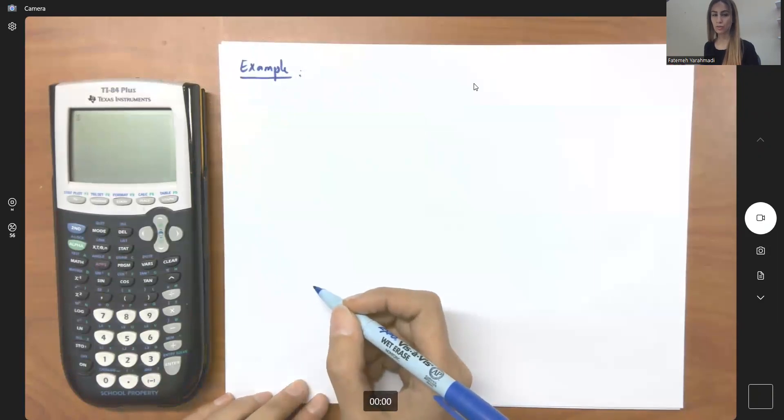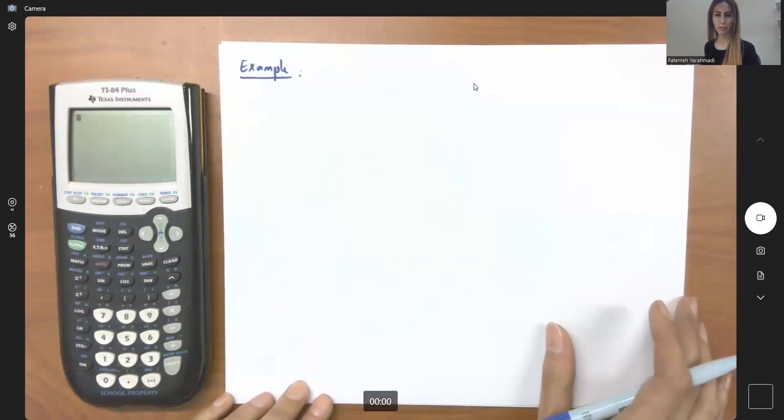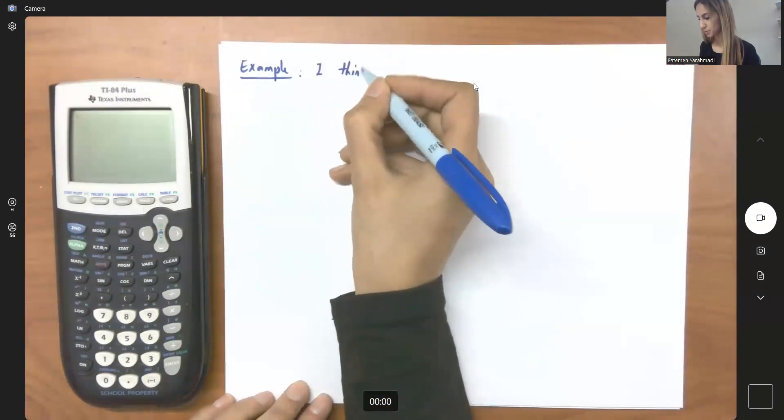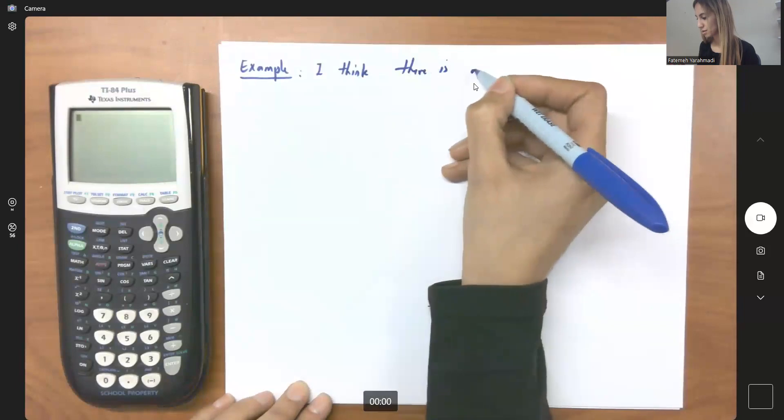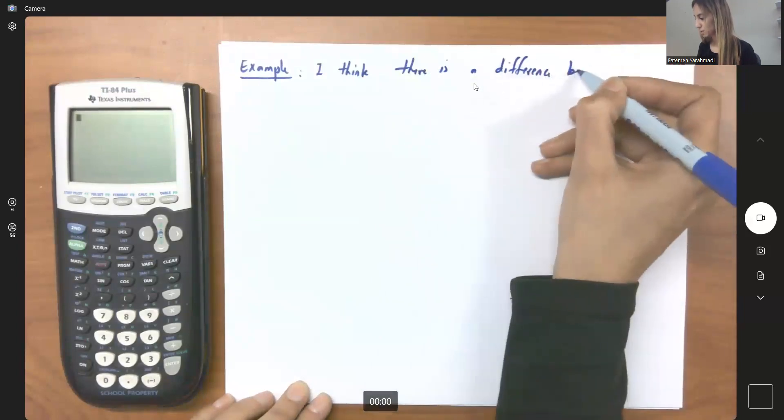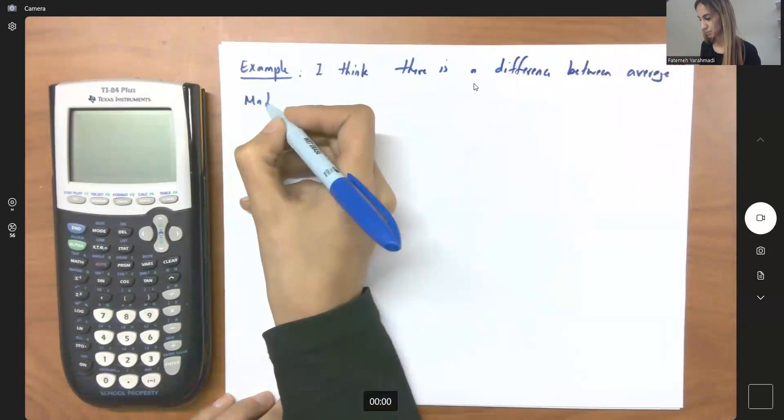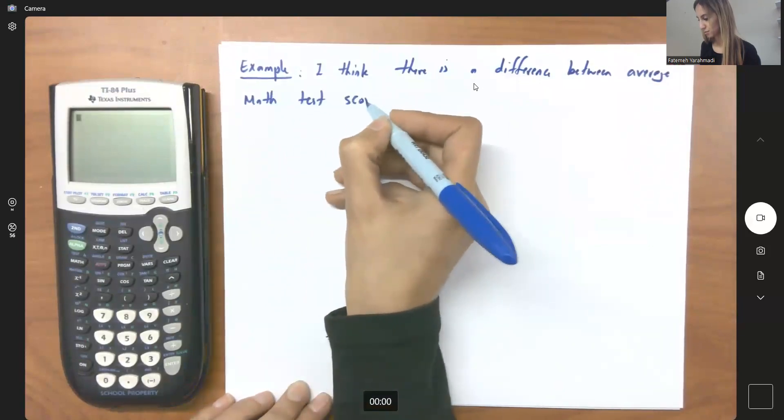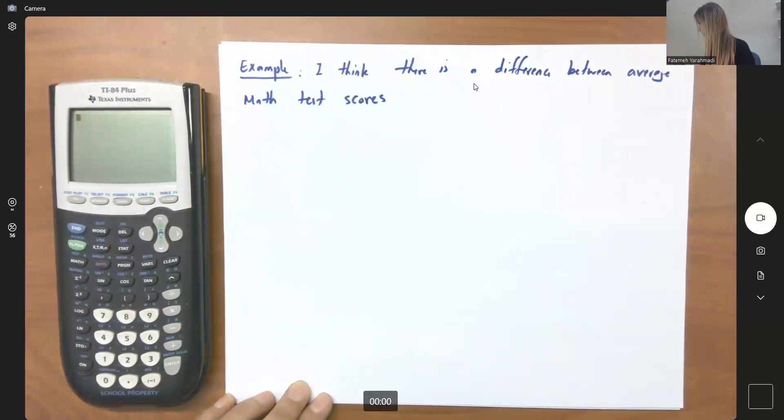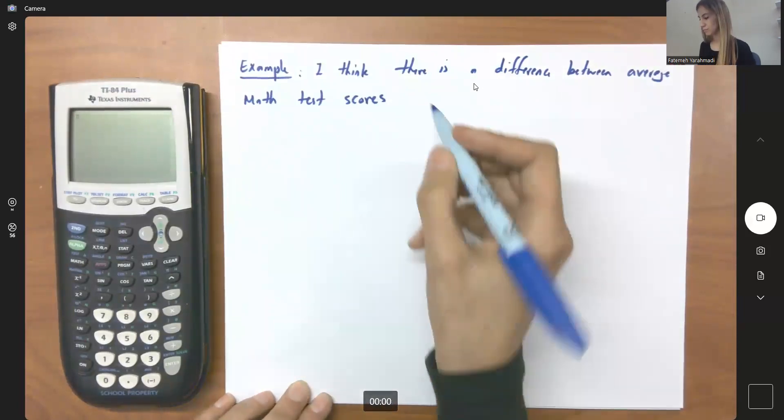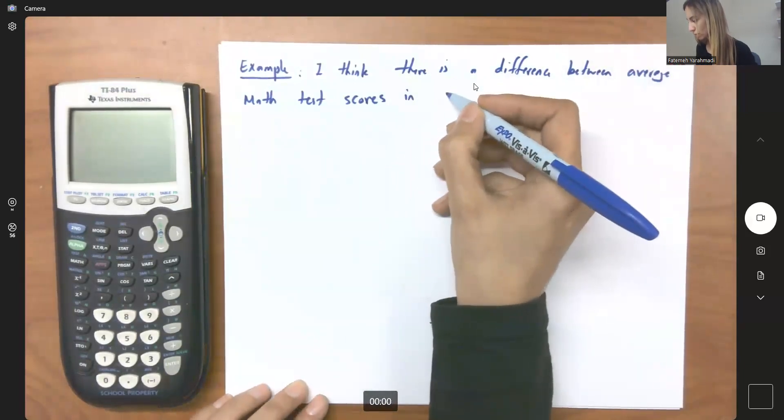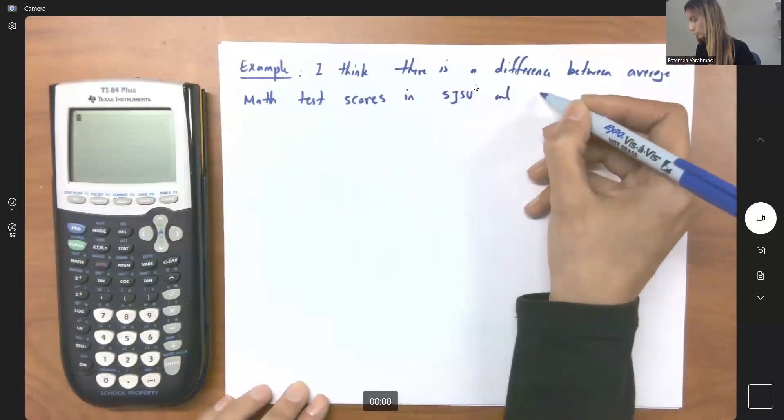I would like to check what's the difference between average test scores in San Jose State University and, for example, Stanford University. I'm going to claim that I think there is a difference between average math test scores in San Jose State University and Stanford.